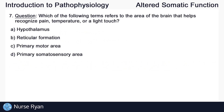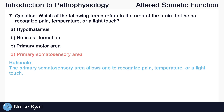Question number seven: which of the following terms refers to the area of the brain that helps recognize pain, temperature, or a light touch? The correct answer here is D, the primary somatosensory area.